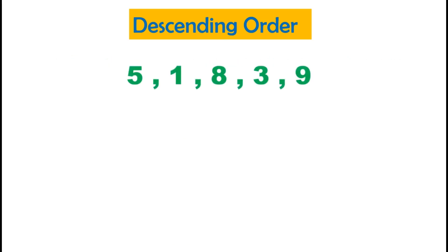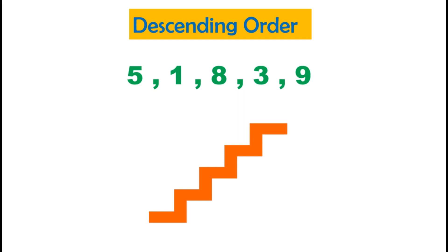Arrange 5, 1, 8, 3, and 9 in descending order. Here we have to find out the biggest number first. The biggest number is 9 — let's circle it, as it is already placed in the order.